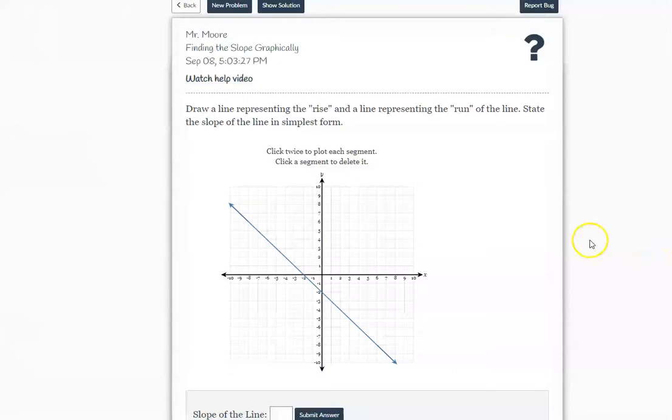Okay guys, we did this in class. Let's do this again just in case you need a little extra help. You want to find a line that represents the rise and run of the line and state the slope in simplest form.